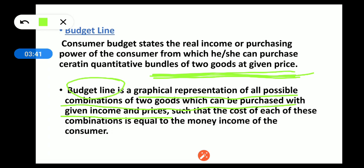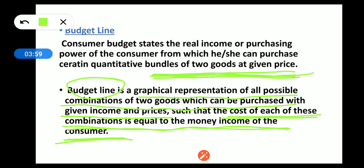The budget line represents combinations of two goods which can be purchased with given income and prices, such that the cost of each of these combinations is equal to the money income of the consumer. This definition is very important — the cost of each combination equals the consumer's money income.